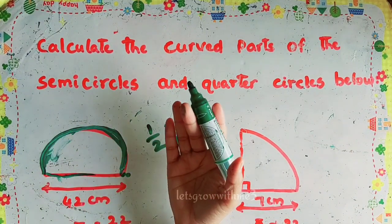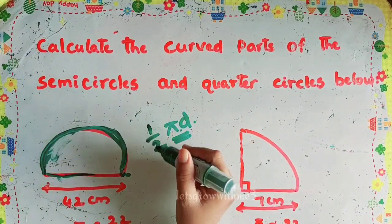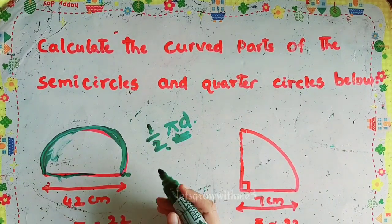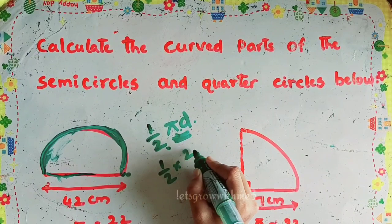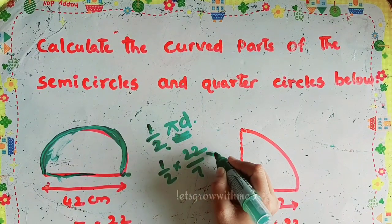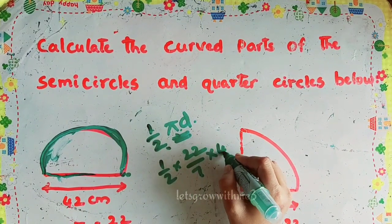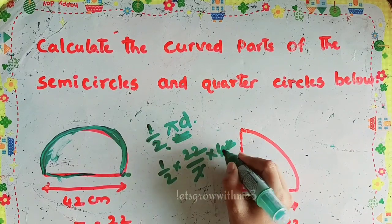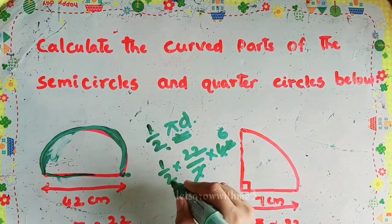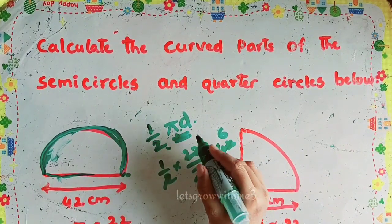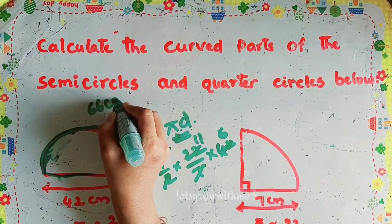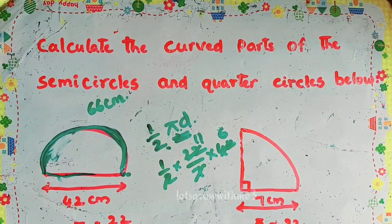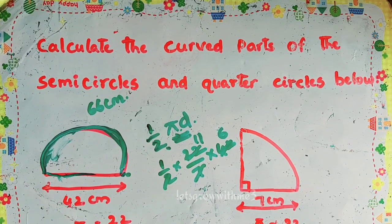So we substitute: (1/2) times 22/7 times diameter, where diameter is 42 centimeters. Taking the common factor: 7 into 42 is 6, then 11 times 6 is 66 centimeters. So the curved part of this semicircle is 66 centimeters.